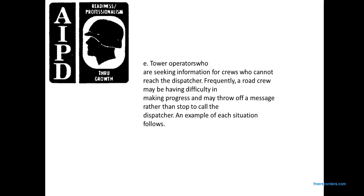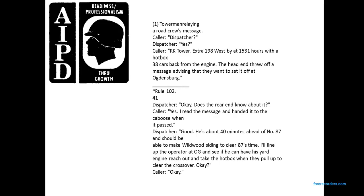Tower operators may seek information from crews who cannot reach the dispatcher. A road crew may have difficulty passing a message rather than making a direct call to the dispatcher. Example of a tower relaying a road crew message: Caller says 'Dispatcher.' Dispatcher says 'Yes.' Caller says 'RK Tower. Extra 198 West passed by at 15:31 past the hour with a hot box, 38 cars back from the engine. The head end threw a message advising they want to set off at Ogundensburg.'